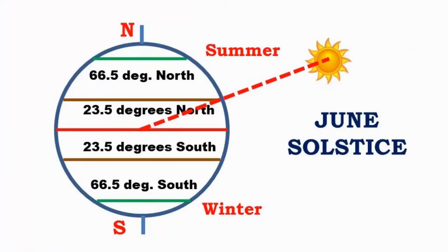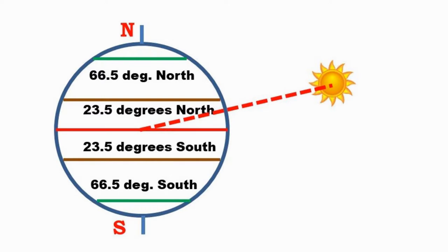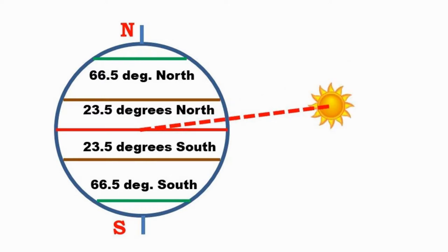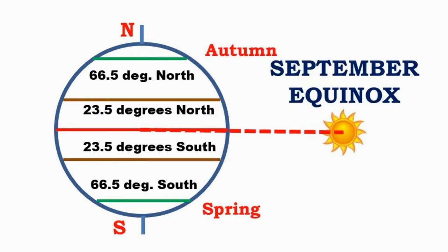We have the June solstice around June 21st when the Sun is at maximum declination in the Northern Hemisphere. This represents summer in the Northern Hemisphere and winter in the Southern Hemisphere. As the days go by, the declination of the Sun decreases. We have the September equinox around September 23rd when the Sun is overhead at the equator and the day and night are equally long. This represents autumn in the Northern Hemisphere and spring in the Southern Hemisphere.